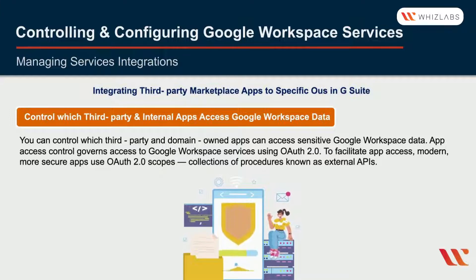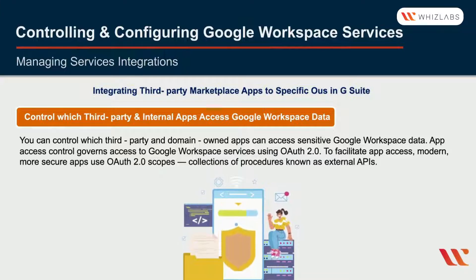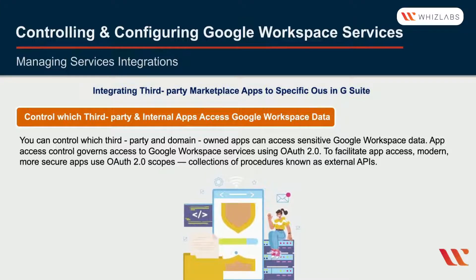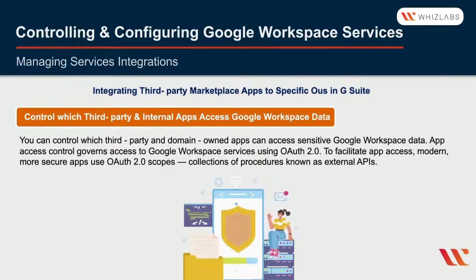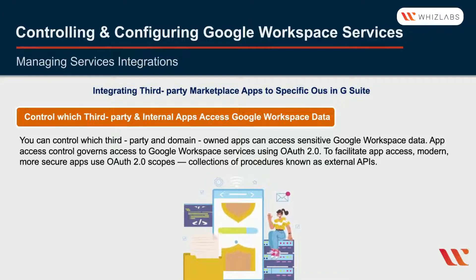You can use app access control to restrict access to most Google Workspace services or leave them unrestricted, trust specific apps so they can access restricted Google Workspace services, and trust all domain-owned apps. You can also control which third-party and internal apps can access Google Workspace data, find details about any third-party apps already in use, and customize the error message users see when they try to install an unauthorized app.